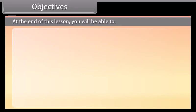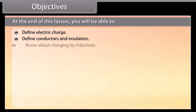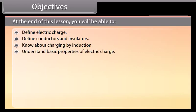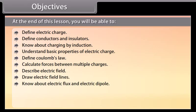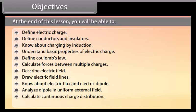Objectives: At the end of this lesson, you'll be able to define electric charge; define conductors and insulators; know about charging by induction; understand basic properties of electric charge; define Coulomb's law; calculate forces between multiple charges; describe electric field; draw electric field lines; know about electric flux and electric dipole; analyze a dipole in a uniform external field; calculate continuous charge distribution; and define Gauss's law and its applications.